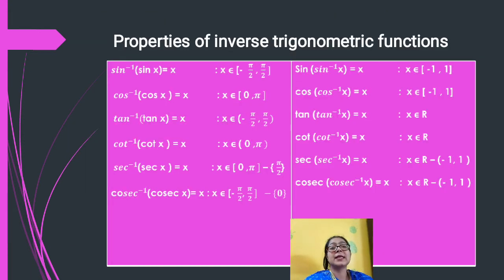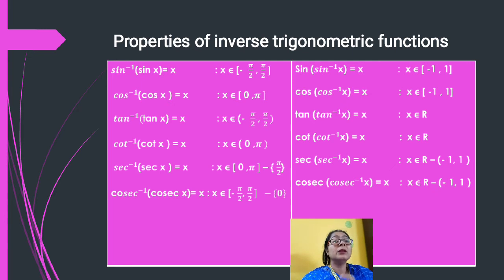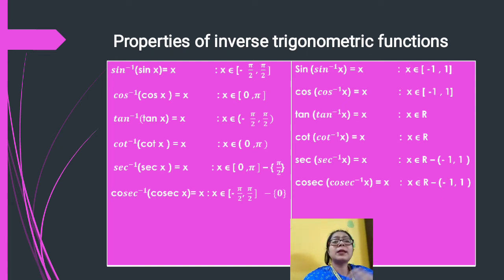Now let's see more properties. Sin⁻¹(sin x) = x — if we write only this, it looks like sin⁻¹ and sin cancel to give x, but that is wrong. We must mention that x belongs to [−π/2, +π/2], meaning we have to write the range. Similarly, cos⁻¹(cos x) = x where x belongs to [0, π]. If x is more than π, we cannot write cos⁻¹(cos x) = x. This range is also called the principal value branch.